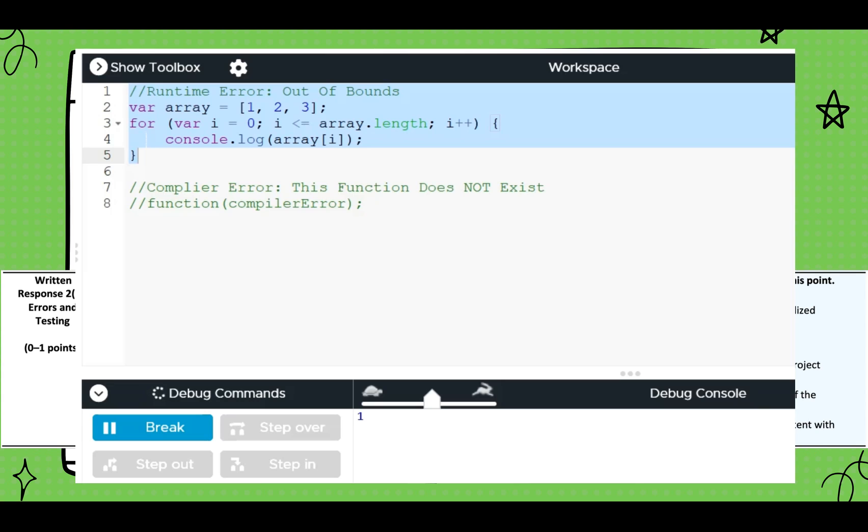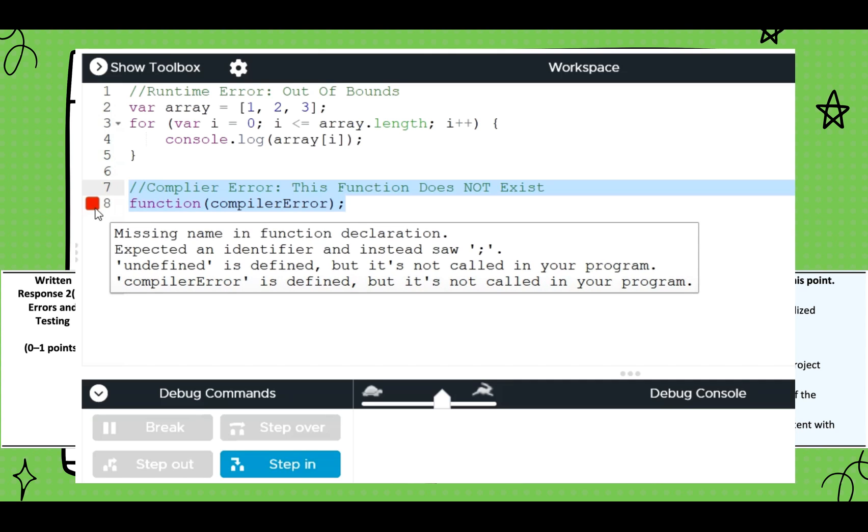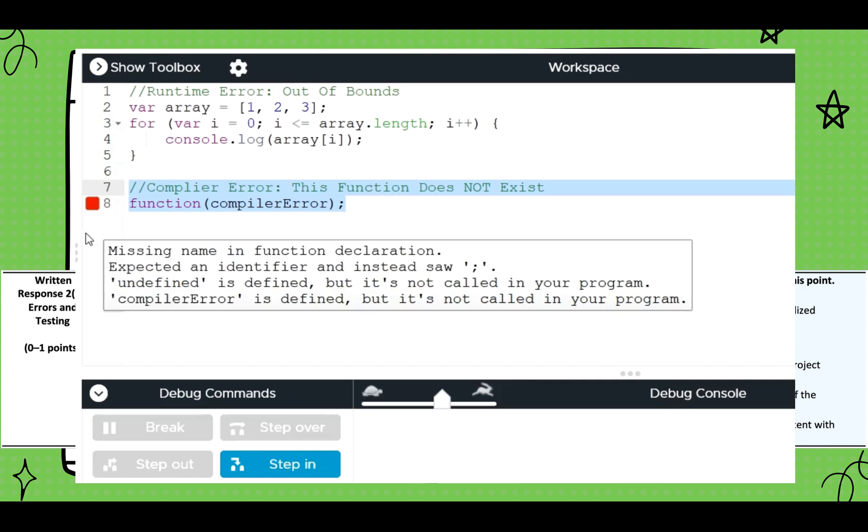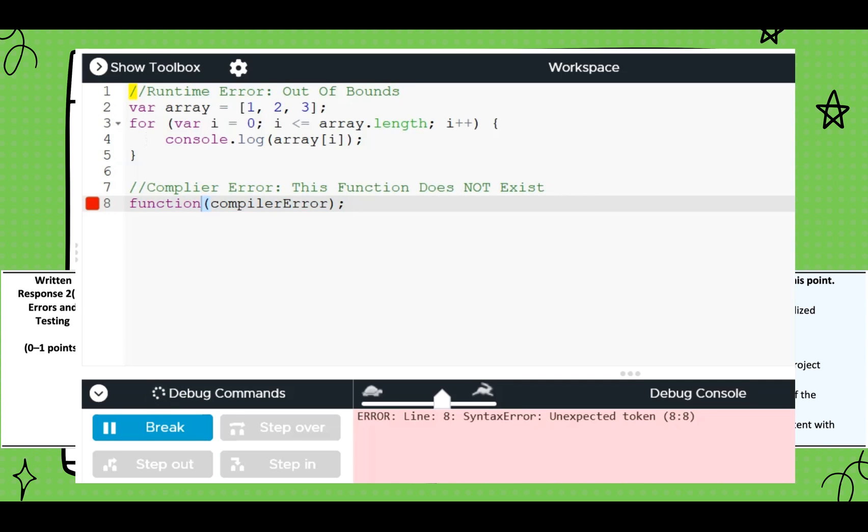Let's look at an example of this in code. First, we have a runtime error. See how the code runs? Then it finds the error. A compiler or syntax error won't even run. Usually, we get a warning about these before we even run the program.